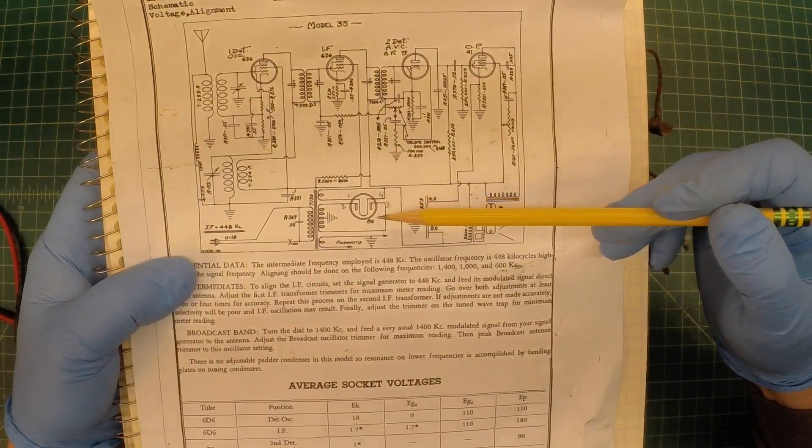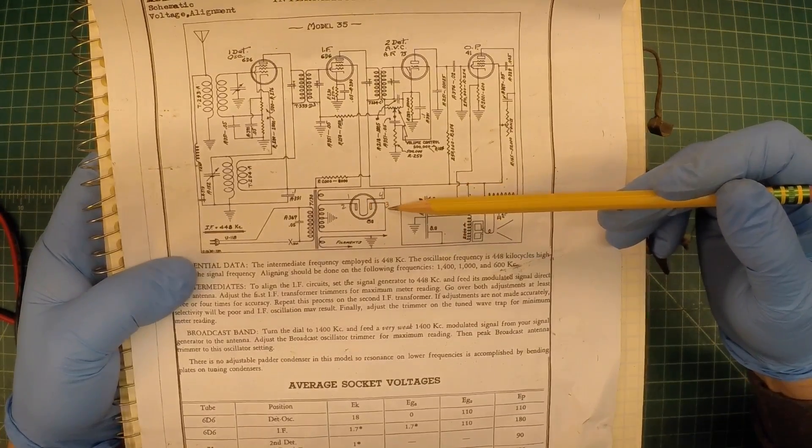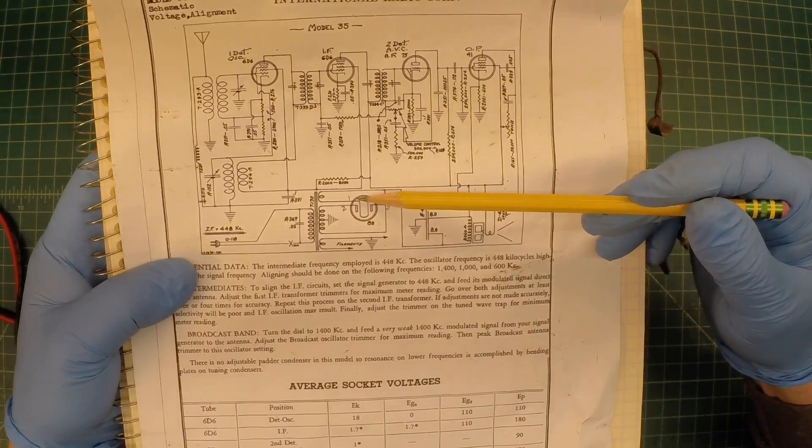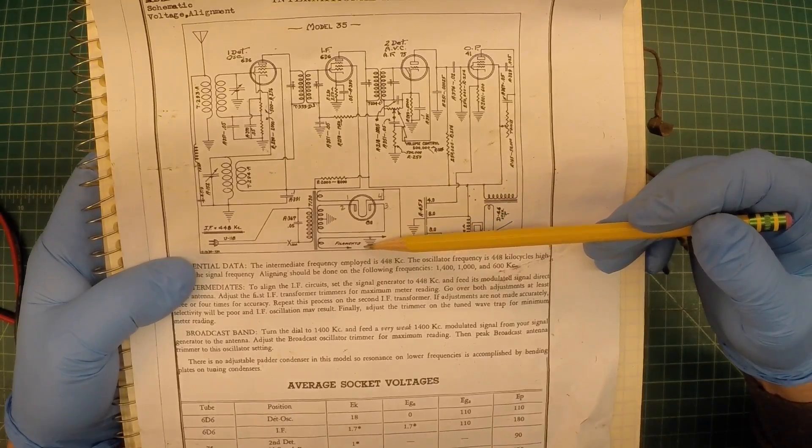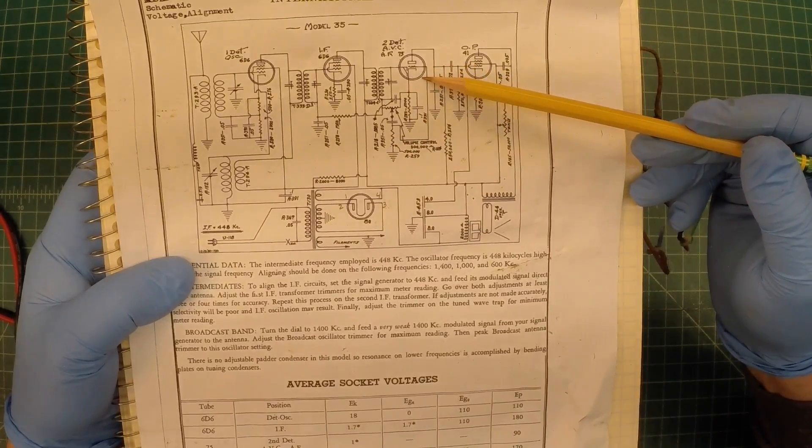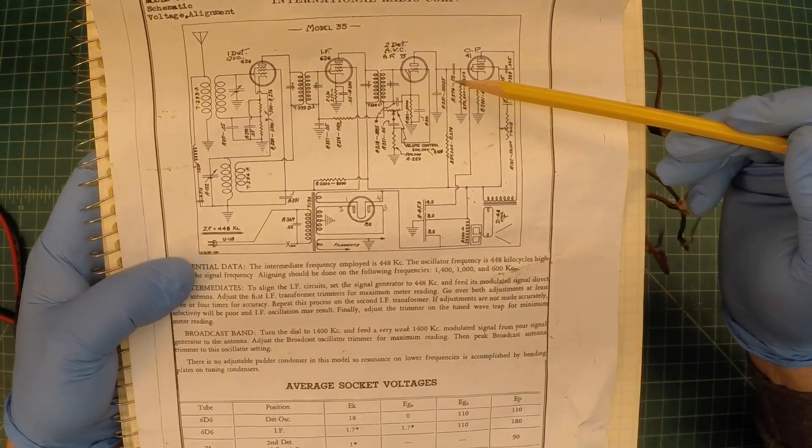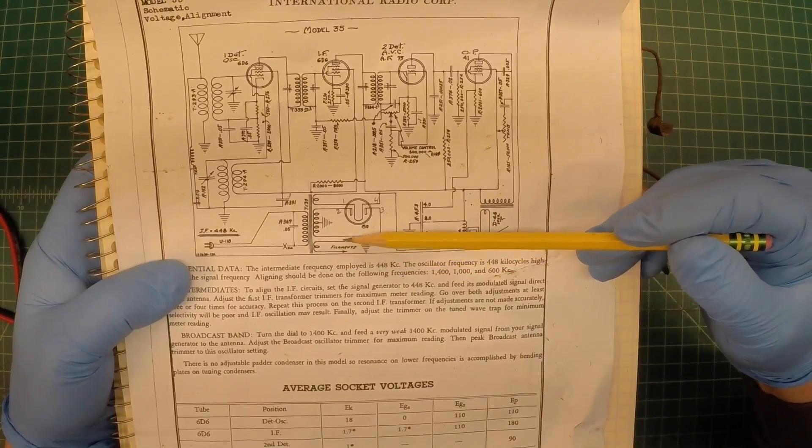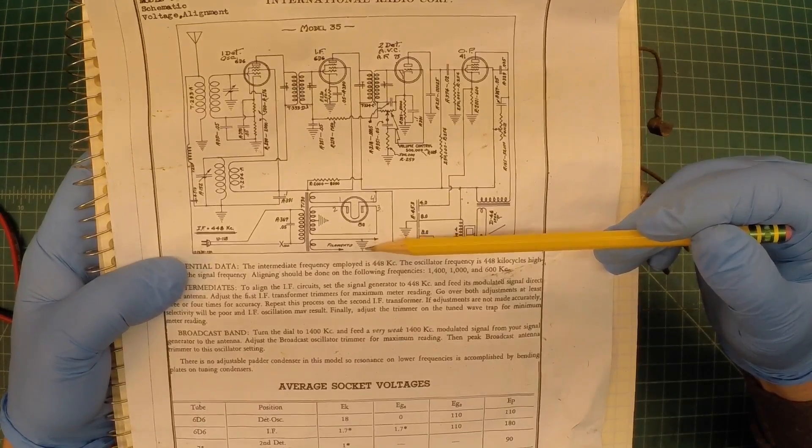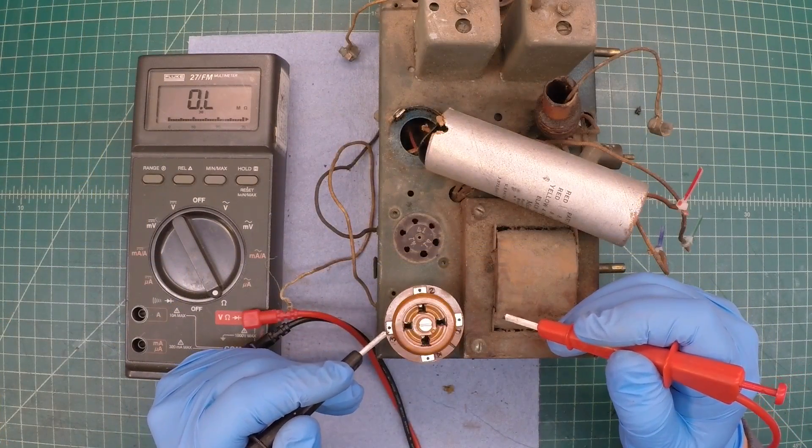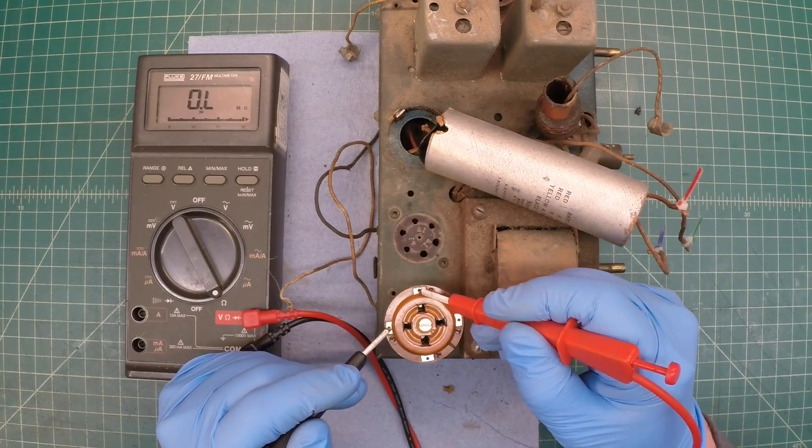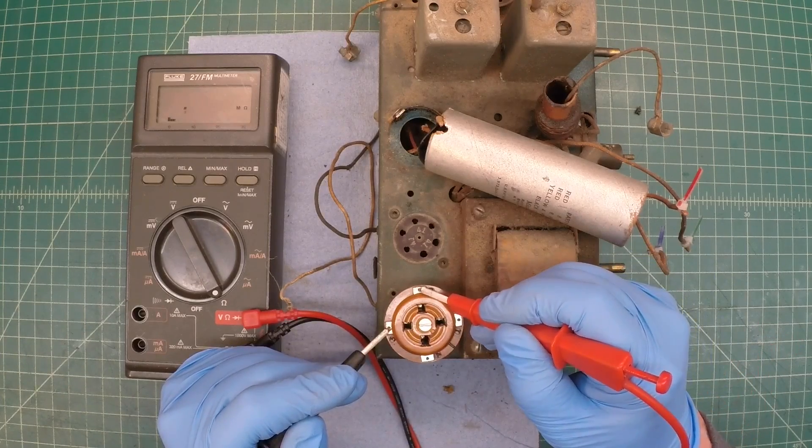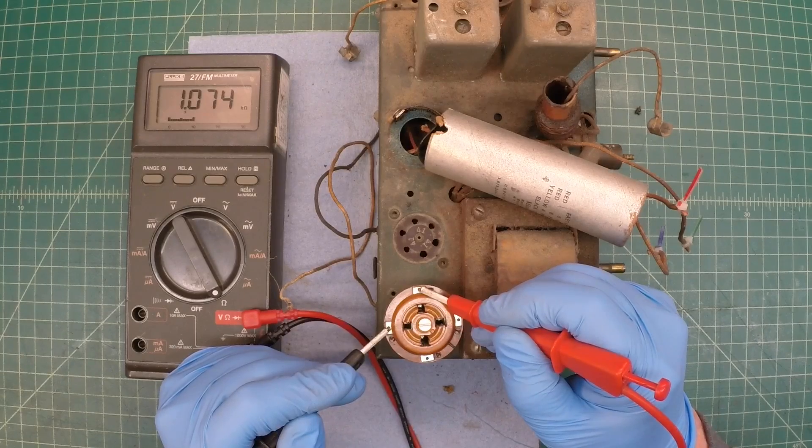We'll read DC resistance here on pins two and three, then do the same for pins one and four. Then we'll look at the filament voltage for the remaining tubes. I'll get another tube socket adapter out and make sure the filament winding on the transformer is good as well. One side goes to chassis ground. Let's check the secondary of the transformer, pins two to three. I don't like what I see there - about 1k, that seems really high.